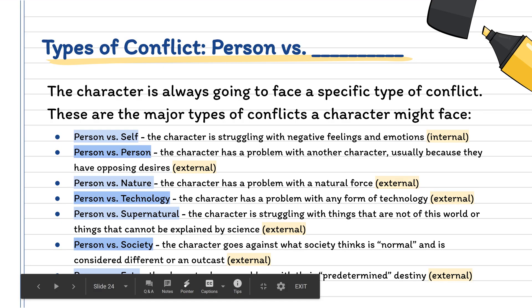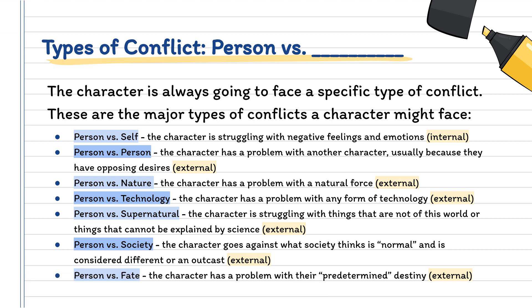Now there are many different types of conflicts in regards to person versus whatever it is. Remember, your character is going to face some sort of conflict, and usually they will face more than one. Let's look at the different types of major conflicts you will see your character face. First is person versus self — the character is going to struggle with a negative feeling or emotion. This is the only type of internal conflict. All the other conflicts are going to be external.